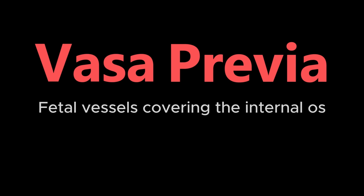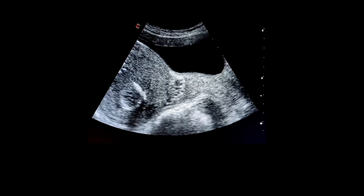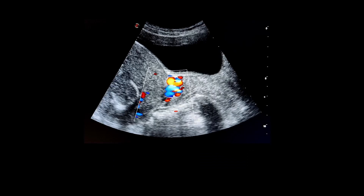The term vasa previa means presence of fetal vessels at the internal os, as seen in figures A and B, which show two types. Type 1 is associated with filamentous insertion of the cord, and type 2 is associated with an accessory lobe of the placenta in which the traversing vessels cross the internal os. We should document the fetal heart rate in those vessels, as in this case which showed fetal vessels covering the internal os with fetal heart rate on waveform.